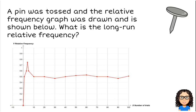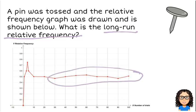Let's try this question. A pin was tossed, and the relative frequency graph was drawn, and is shown below. What is the long run relative frequency? So long run, that is saying, over time, this is heading towards a probability. And you can see, after about 100 trials there, that probability is around about 0.5. So I would say approximately 0.5.